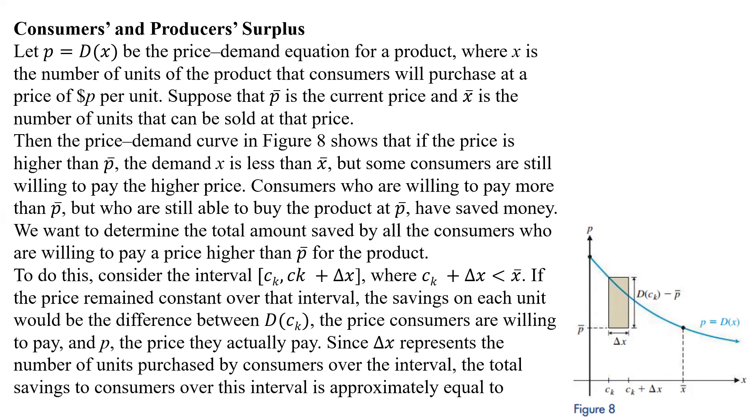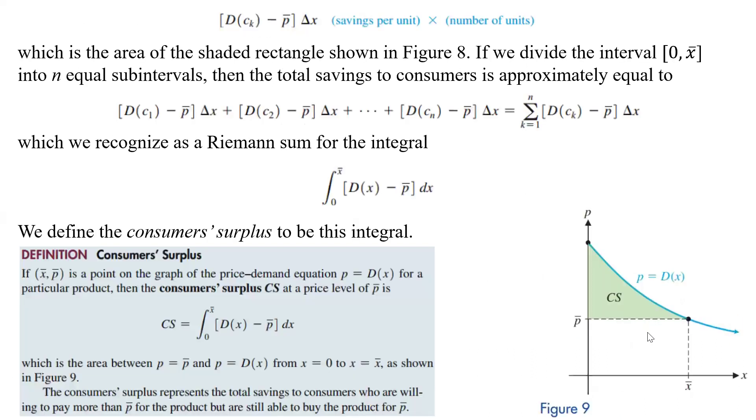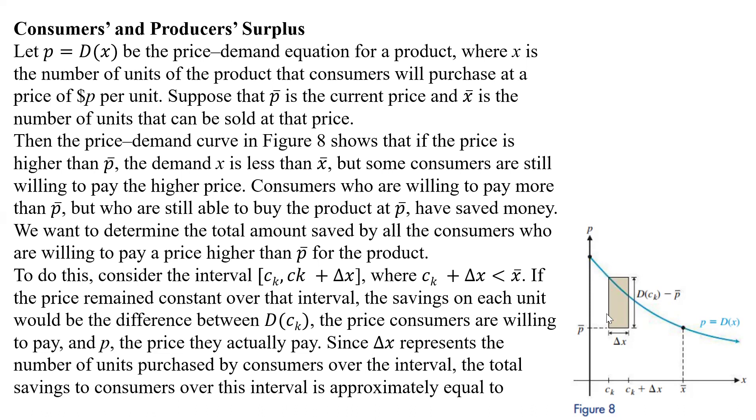Since delta X represents the number of units purchased by consumers over the interval, the total savings to consumers over this interval is going to be equal to D of CK minus P bar, and all that times delta X. So basically, the savings per unit times the number of units. That's going to be the area of the shaded rectangle shown in figure 8. So that's basically this area here. That's the delta X, and that's the D of CK minus the P bar.